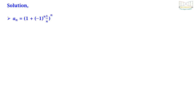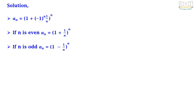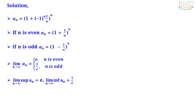Solution: we have a_n = (1 + (-1)^n · (1/n))^n. If n is even, then a_n = (1 + 1/n)^n, and if n is odd, then a_n = (1 - 1/n)^n. This gives lim_{n→∞} a_n = e if n is even, and 1/e if n is odd — these are well-known limits. Therefore, lim sup_{n→∞} a_n = e and lim inf_{n→∞} a_n = 1/e. The correct answer is option D.